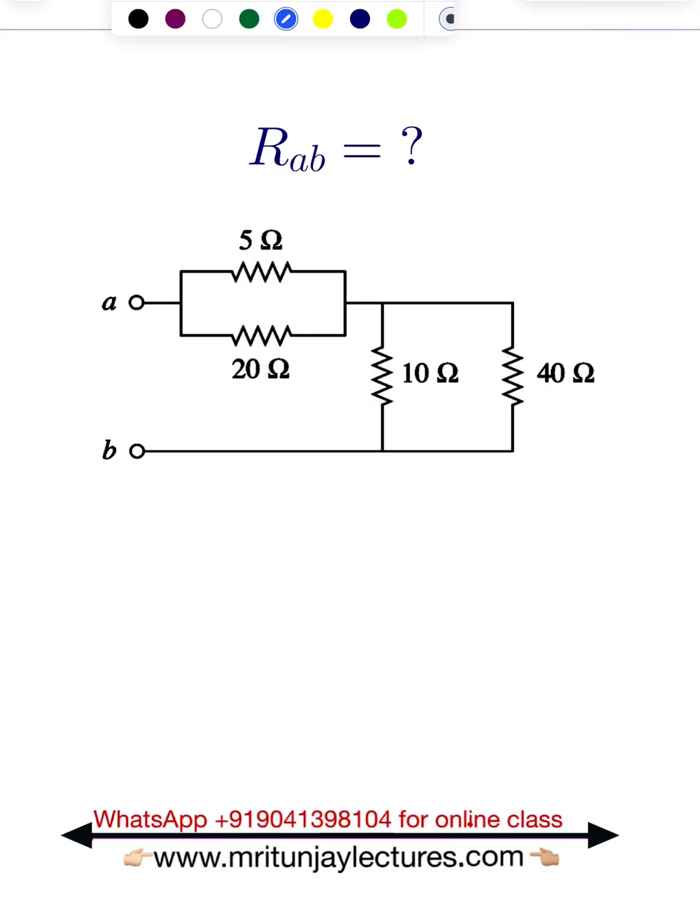To find the equivalent resistance between terminals a and b, look here very carefully. First of all, these two resistors are in parallel. What about that combination? Simply, this one is 10 into 40 divided by the sum of these two, which is 50. Cancel the zeros—4, 5, 2—so basically 8 ohm.